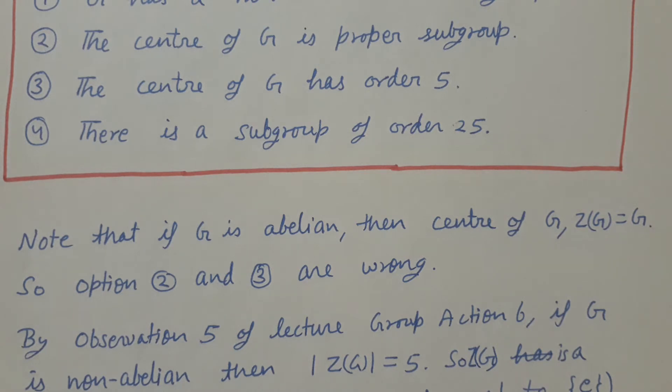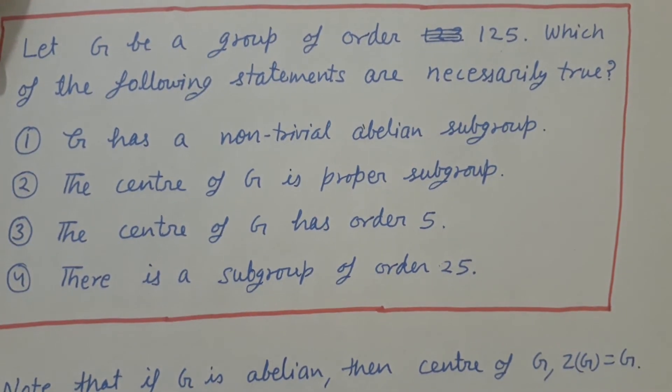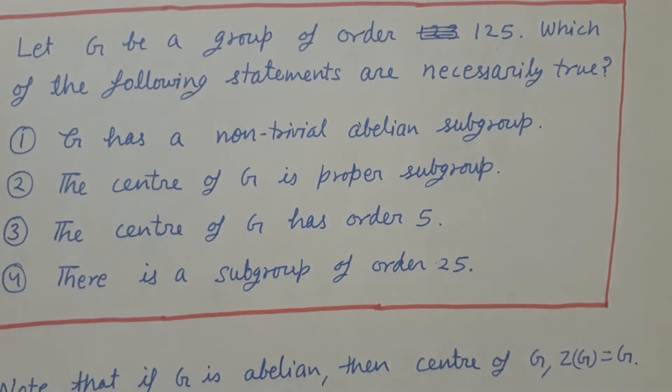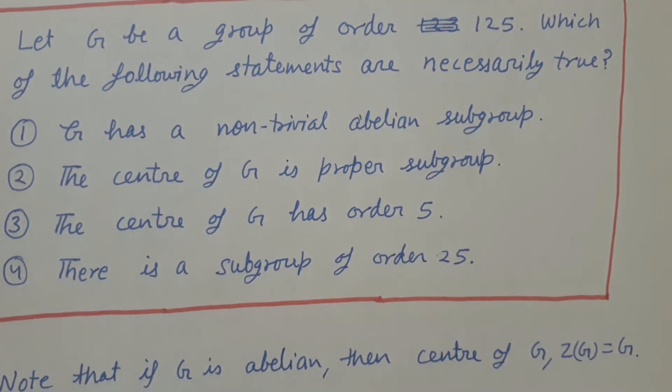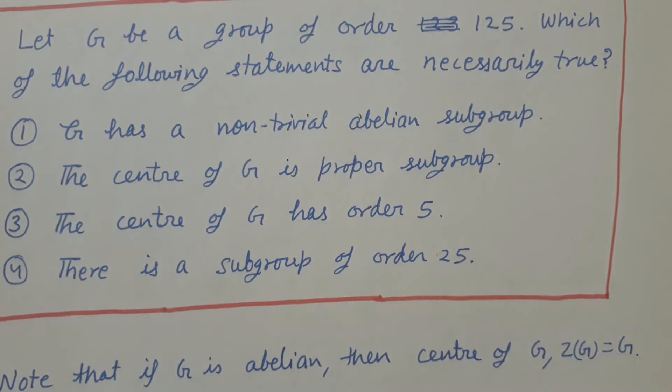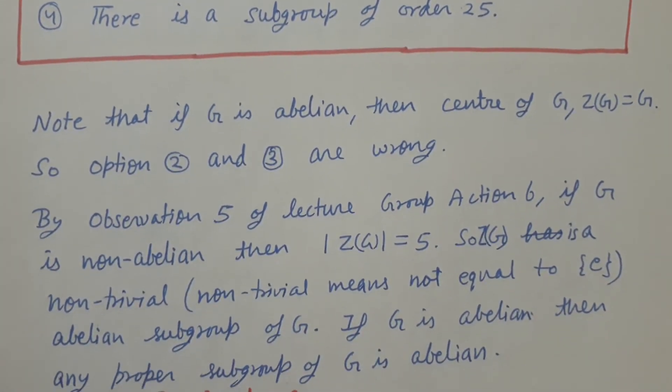G is any group of order 125, so option 2 is wrong. Now, the center of G has order 5. This is also wrong because the center of G may have order 125 in case of an abelian group.